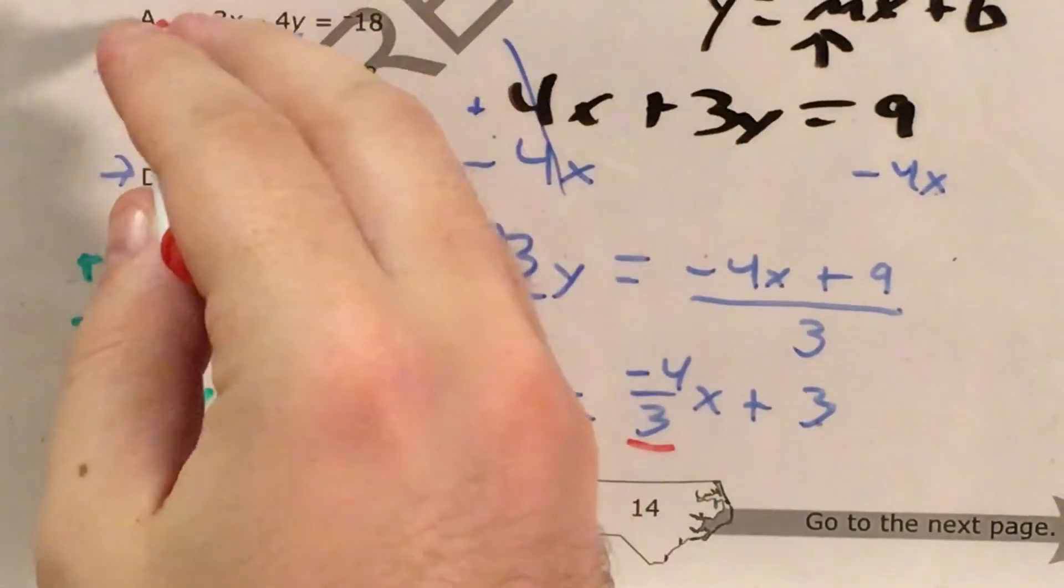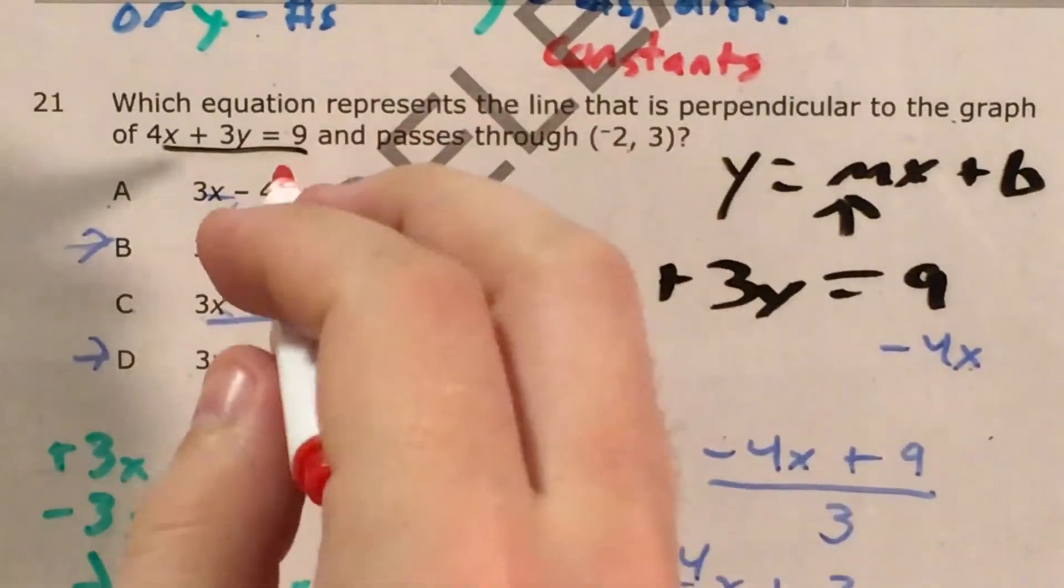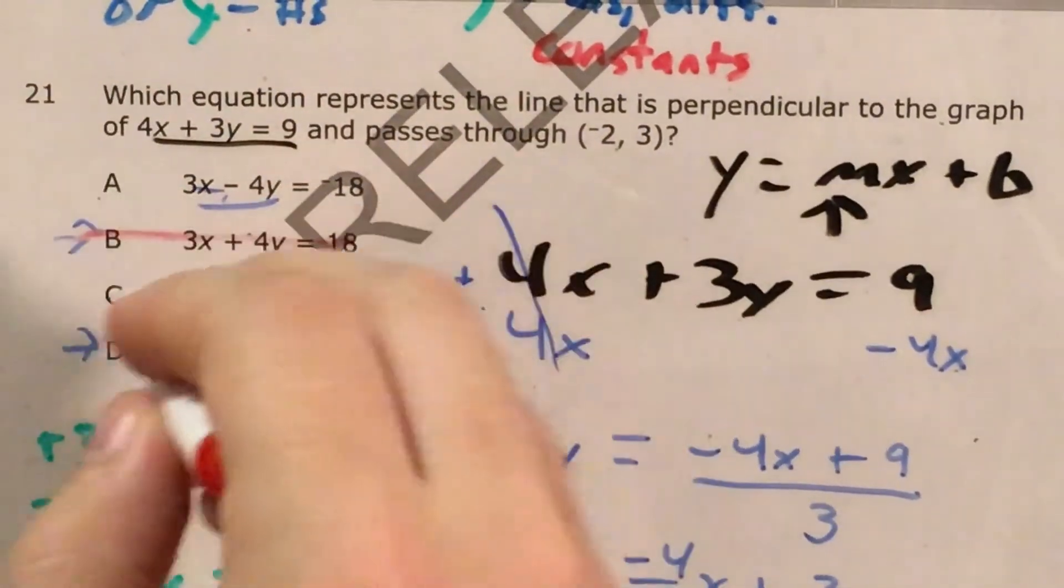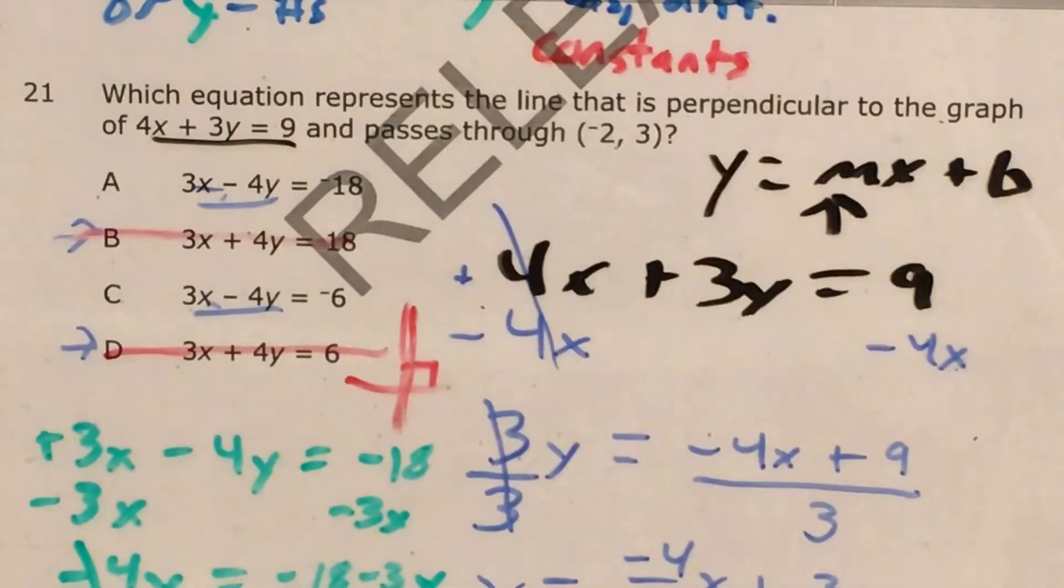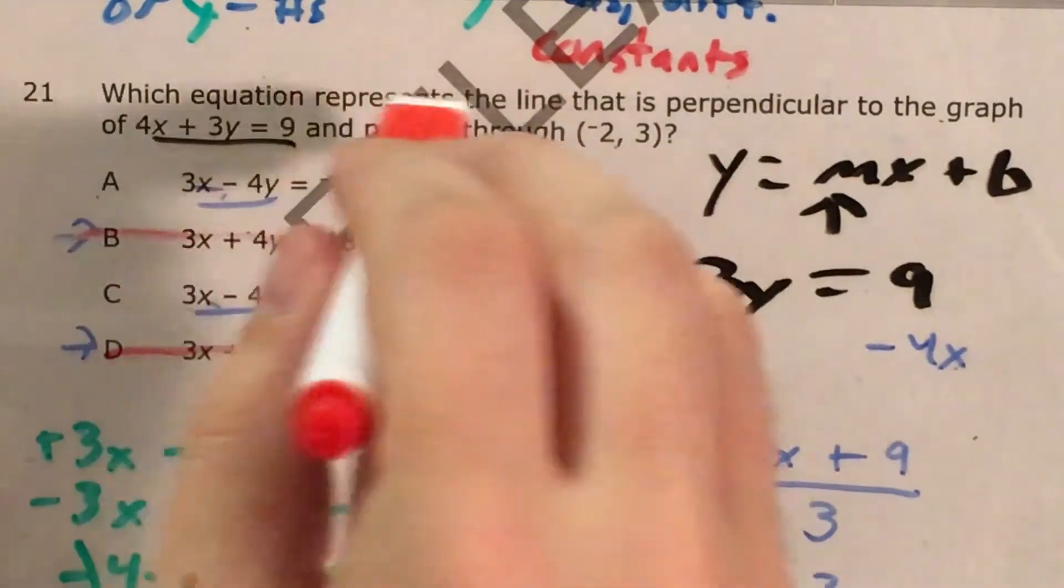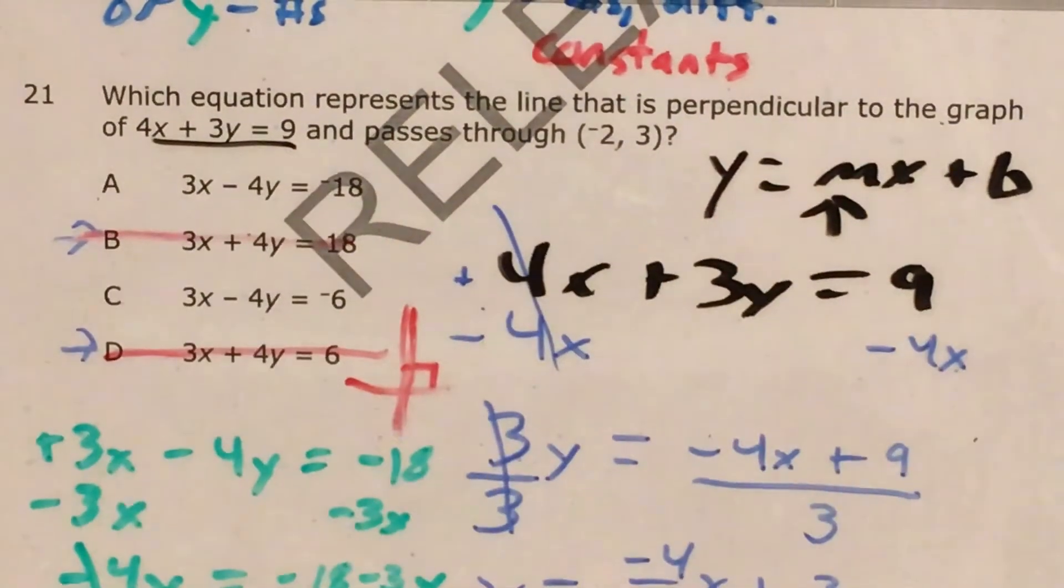So now the last question is, which is it? Is it 3x - 4y = -18? Or is it 3x - 4y = -6? And it's at this point that we actually need to go back to this ordered pair that the problem gave us, x of -2, y of 3.